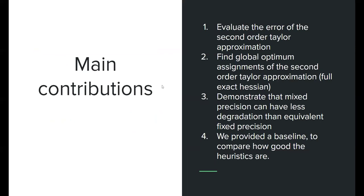Our main contributions are: evaluating the error introduced by the second-order approximation; being the first work (that we know of) to find global optimum assignments of the second-order Taylor approximation without Hessian heuristics, using the full exact Hessian; demonstrating that mixed precision can have less degradation than fixed precision; and providing a baseline to compare how good other heuristics are — they may be faster, but it's worth evaluating the trade-off.